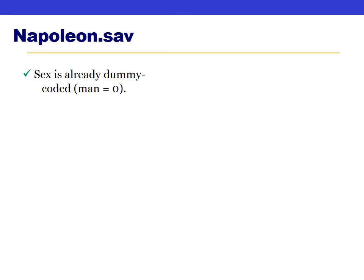Okay, let's look at this. The first thing to check is whether the sex variable needs to be dummy coded. Fortunately, it was already dummy coded for us — men were coded as zero, women as one — so we don't need to do step one.